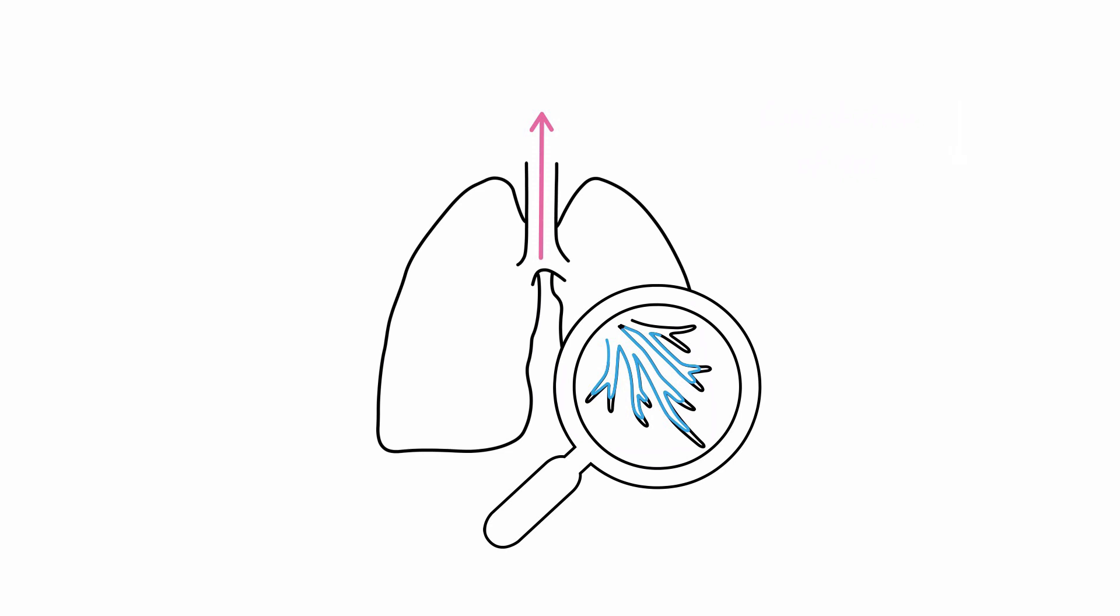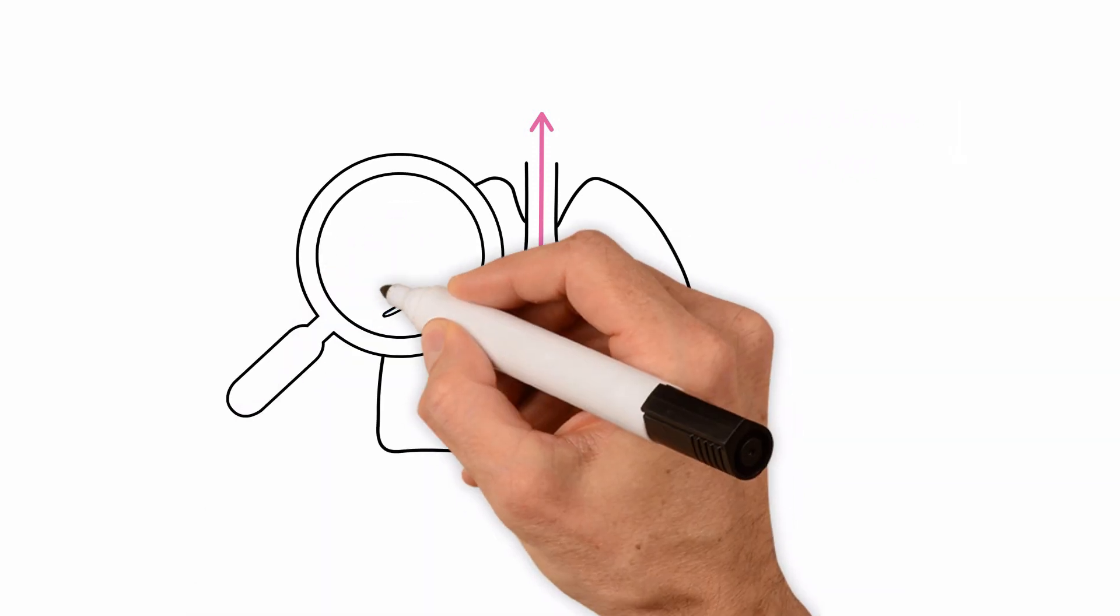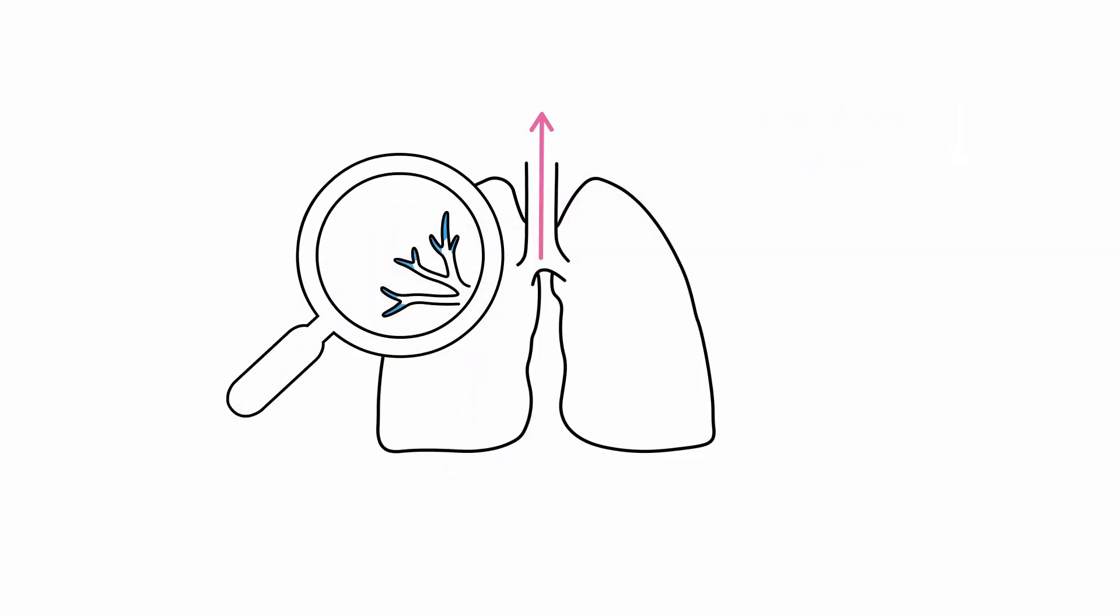And as exhalation progresses, more exhaled gas comes from the apices, which represent the less diluted alveolar air, which is higher in nitrogen concentration.